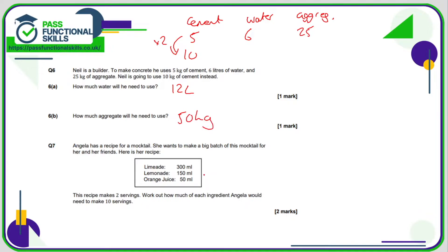For Angela's mocktail, this is for two servings. If she wants 10 servings, that's five times more than two, so she's going to need to multiply all ingredients by five. We can use a calculator for this, so 300 times five for the limeade is 1500 milliliters. For the lemonade it's 150 times five which is 750 milliliters, and for the orange juice it's 50 times five which is 250 milliliters.